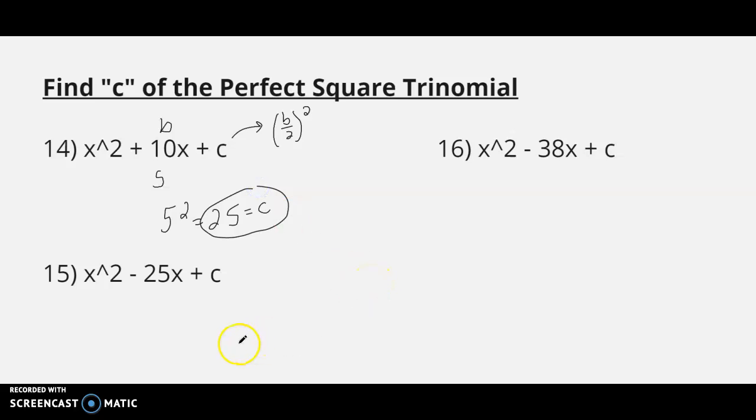Alright, for number 15, oh, I think we had another typo here. Let me just rewrite. 15 should have been x squared minus 24x plus c, and we're finding out what c is. We take half of 24, which is negative 12. Square to negative 12, and we get a positive 144.